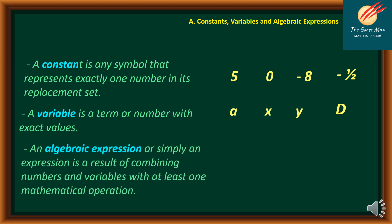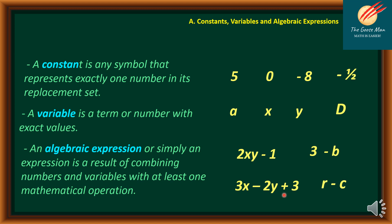An algebraic expression, or simply an expression, is the result of combining numbers and variables with at least one mathematical operation. For example: 2XY minus 1, where there is a subtraction symbol. Another example is 3 minus B, or 3X minus 2Y plus 3, where we have both subtraction and addition. And finally, R minus C.